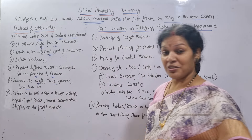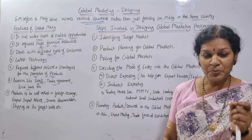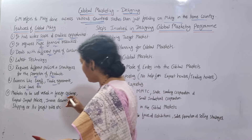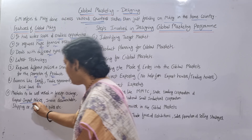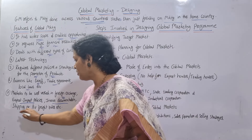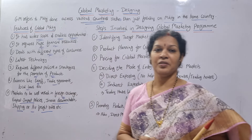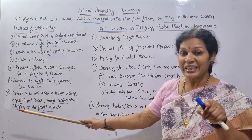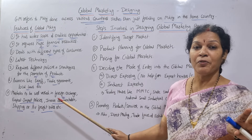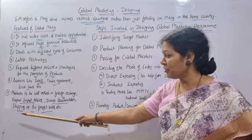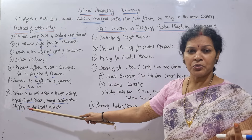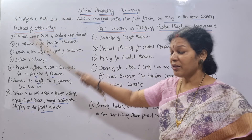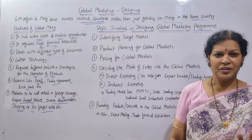The seventh feature is that marketers must be well versed. Global marketers must be expert in areas like foreign exchange, export and import policies, invoice documentation, and shipping or air freight rules. These are all involved in global marketing, and the global marketer needs to be well versed in all these areas.